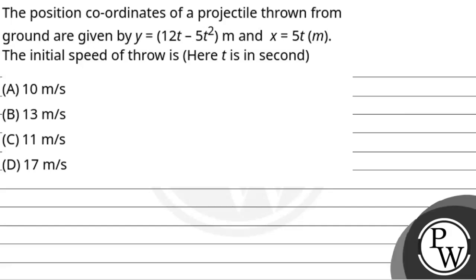Hello Achoo! Let's read the question. The position coordinates of a projectile thrown from ground are given by y = 12t - 5t² meters and x = 5t meters. The initial speed of throw is... Here t is in seconds.